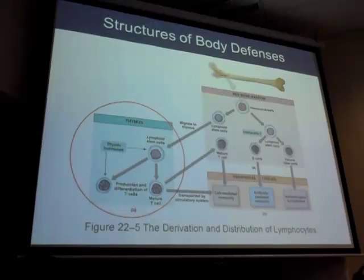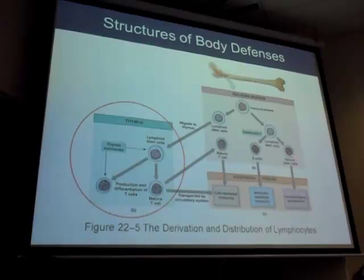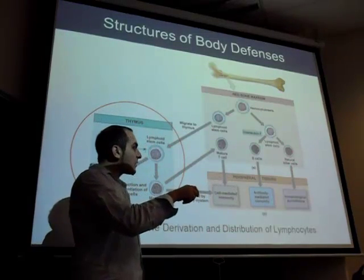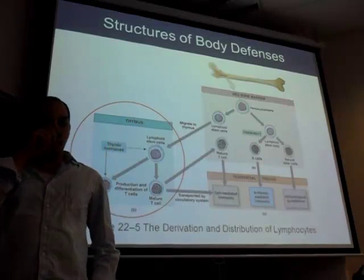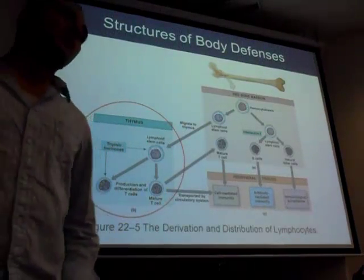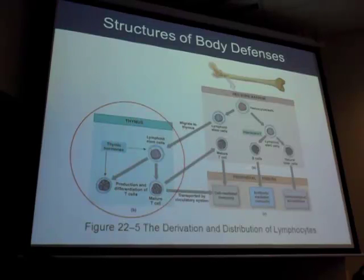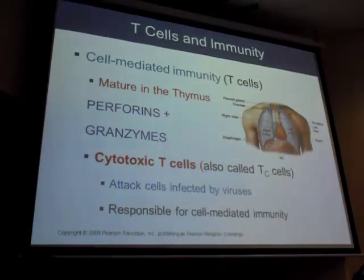B cells come from the bone marrow because they stay and differentiate there. Natural killers also reside in the bone marrow but differ due to different antigens on their surface. Natural killers are part of the innate system — they kill non-specifically. T and B cells are specific: T cells attack one strain of flu one way, B cells make specific antibodies against different bacteria.